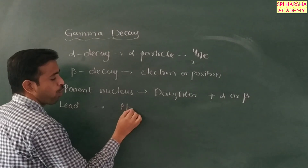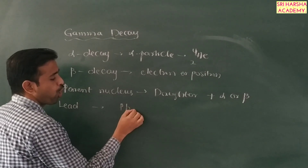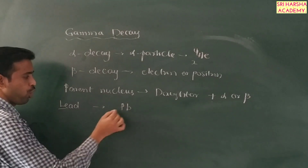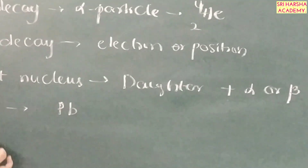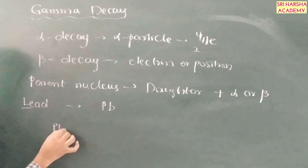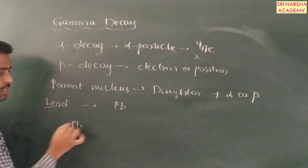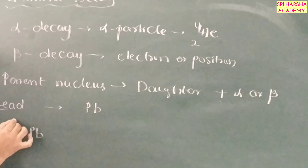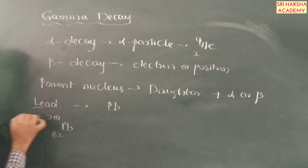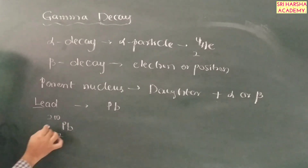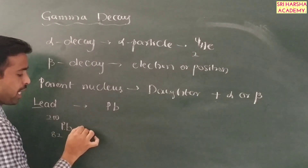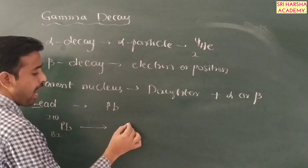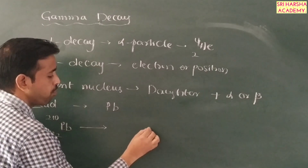Let me take one example: lead, denoted by the symbol Pb. Pb stands for 'plumbum,' which is the Latin name for lead. I want to consider plumbum as the parent nucleus, with atomic number 82 and atomic mass 210.